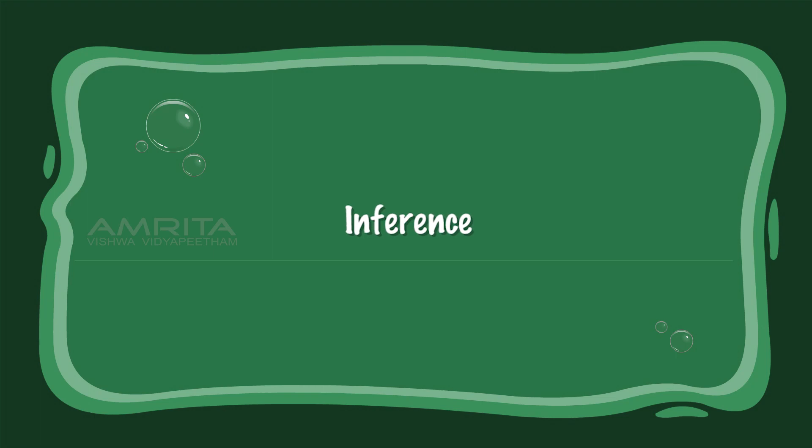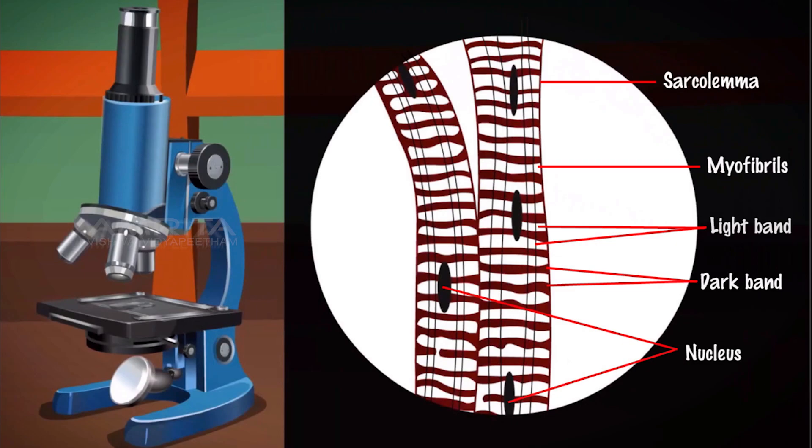Inference: The presence of long cylindrical fibres that are multi-nucleated and the presence of many myofibrils confirms that the cells seen on the slide are striated muscle cells.